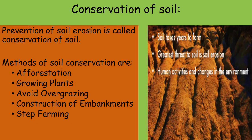Conservation of Soil. Prevention of soil erosion is called conservation of soil. Methods of soil conservation are: afforestation, growing plants, avoid overgrazing, construction of embankments, and step farming.